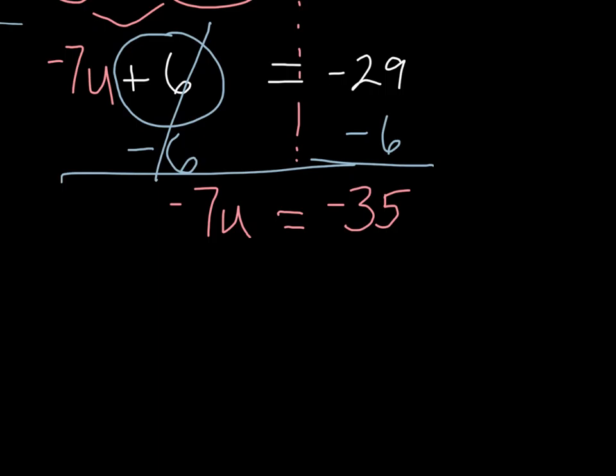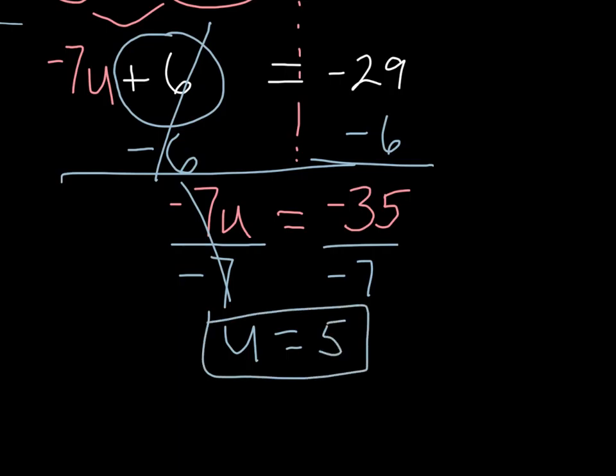Now that I have this negative 35 on the right side, I need to still continue to get u by itself. It's being multiplied by a negative 7, so I'm going to divide by negative 7. Whatever I do to one side I do to the other, so u equals negative 35 divided by negative 7, which is a positive 5. There you go.